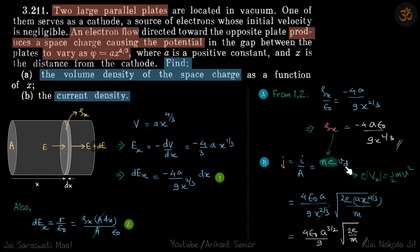So from here we get our drift velocity, which will be 2E Vx by m. And Vx we know is Ax power 4 by 3. So we just put that here and just simplify it a bit. And we will get our answer.